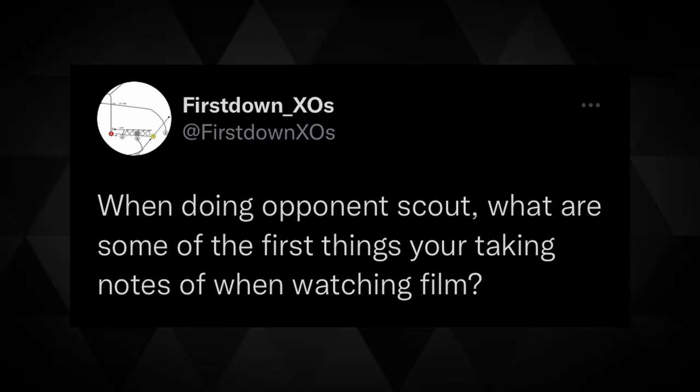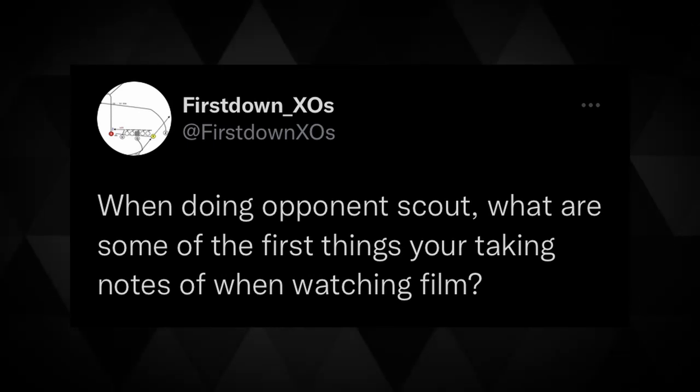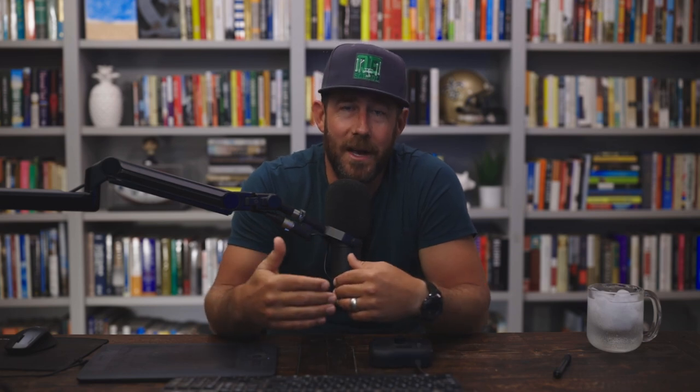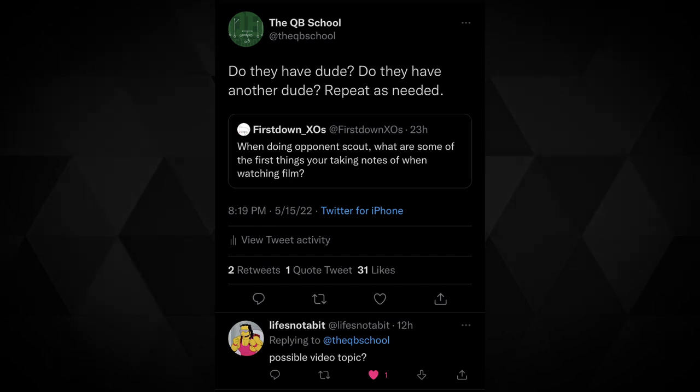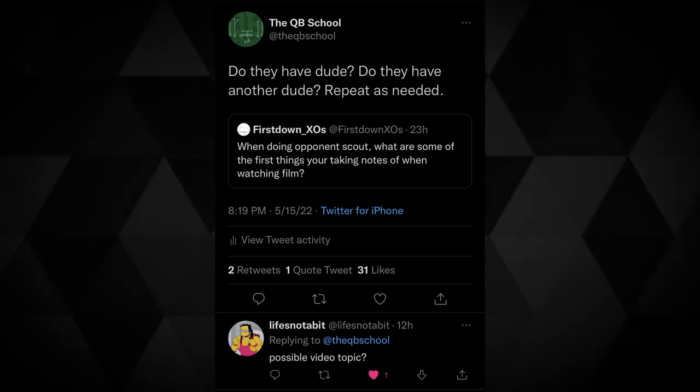The idea for this video came from a tweet I saw from FirstDown_XO's: when doing opponent scout, what are some of the first things you're taking notes of when watching film? Love the prompt, love the engagement, but you are always going to get me to struggle a little bit to not make a joke at your expense with that type of diction. That being said, my response: Do they have a dude? Do they have another dude? Repeat as needed. And then, life's not a bit. My tweet was really kind of an oversimplification, but it really did strike at the core of exactly what I look at when doing an opponent scout.